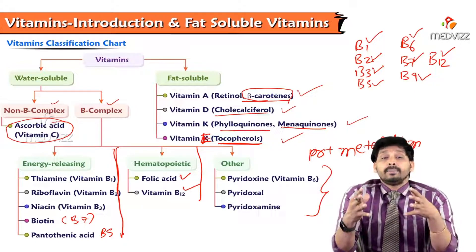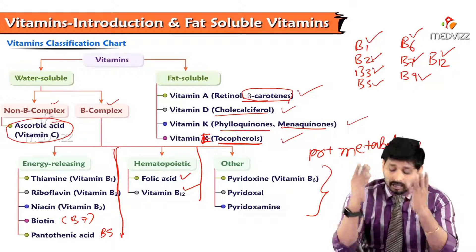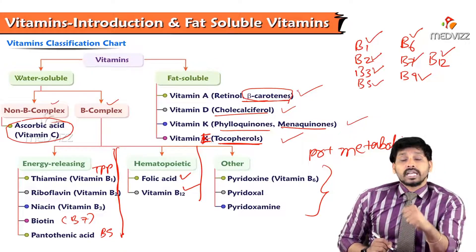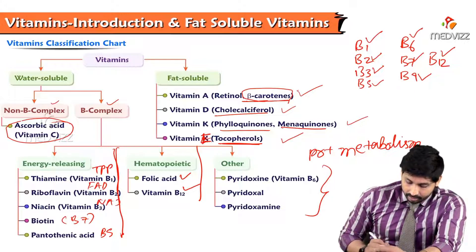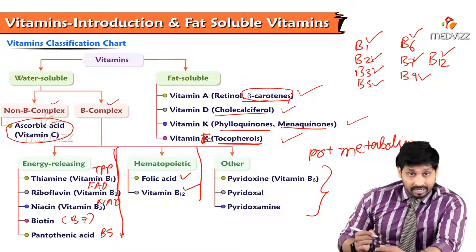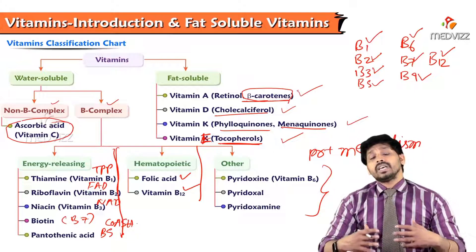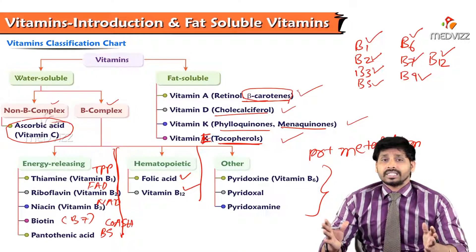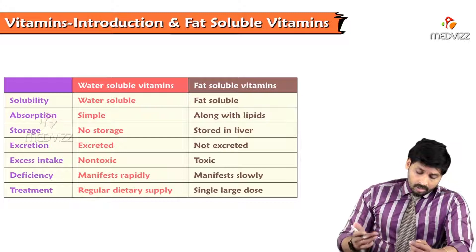For protein metabolism, pyridoxine (B6) is required. These vitamins work not directly but through active coenzyme forms: thiamine's active form is TPP (thiamine pyrophosphate), riboflavin has FAD, niacin has NAD, biotin has biocytin, and pantothenic acid forms CoA-SH. Through these coenzyme forms they carry out their coenzymatic functions.